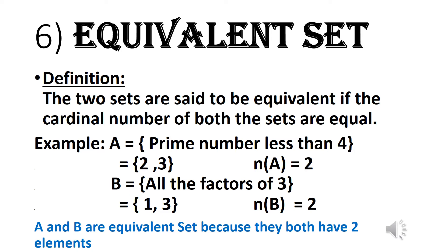Equivalent sets: Two sets are said to be equivalent if the cardinal number of both sets are equal. Example: A = prime numbers less than 4, which are only 2 and 3, so N(A) = 2. B = all factors of 3, which are 1 and 3, so N(B) = 2. Since both sets have two elements, A and B are equivalent sets.